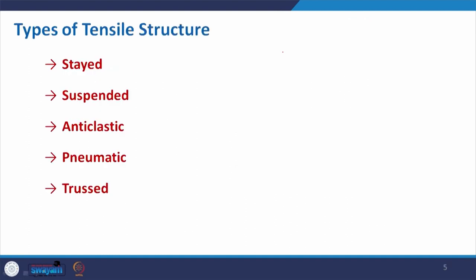Based on how tensile structures are supported and how loads are carried, they are classified into five categories: state cable, suspended, anticlastic, pneumatic, and thrust. Anticlastic refers to a structure with curvature in two opposite directions. Pneumatic structures are formed using air pressure to create form. We will also discuss cable thrust structures.